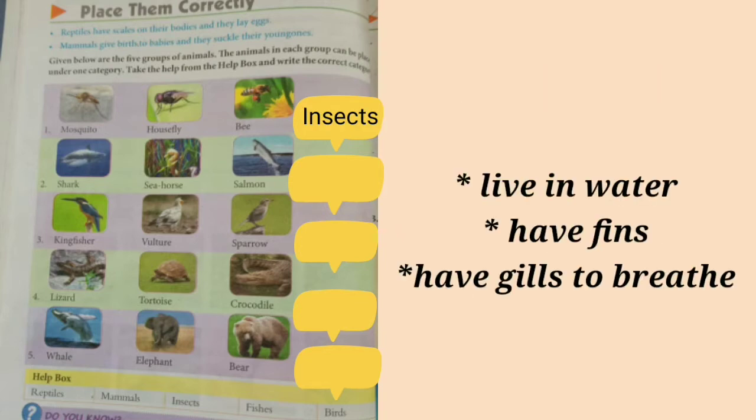In another group, there is shark, seahorse and salmon. All these animals live in water, have fins and have gills to breathe. These are fishes.